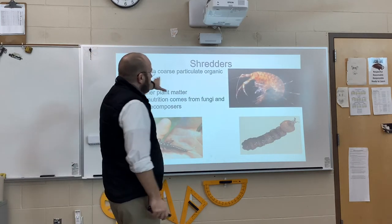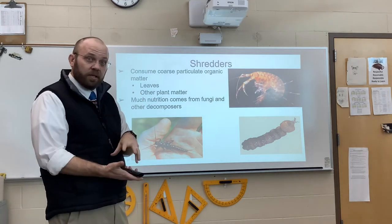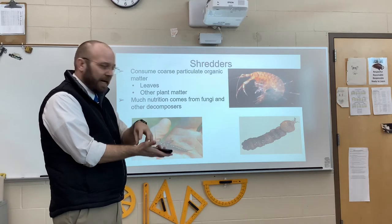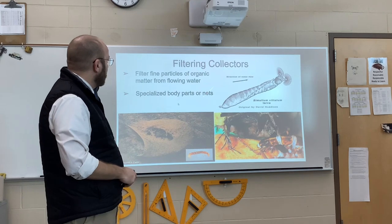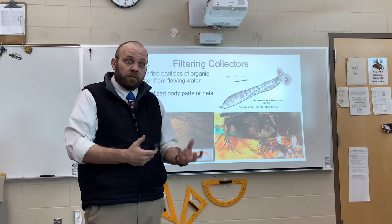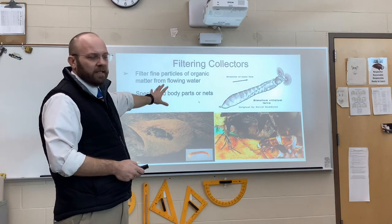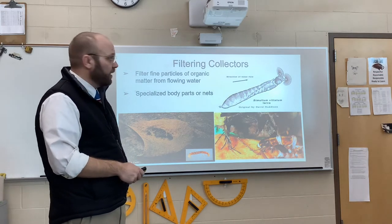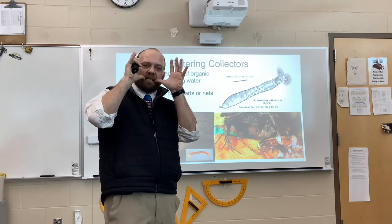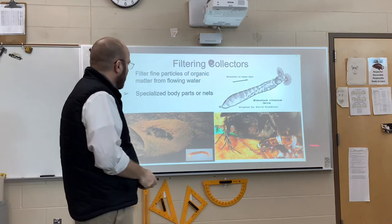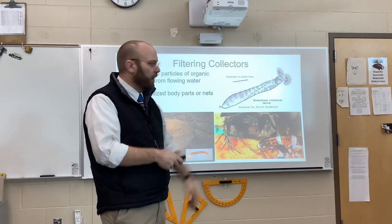Shredders consume coarse particulate organic matter — leaf litter and woody debris. Much of the nutrients they actually consume are the mold, fungi, and diatoms growing on those leaves. Filtering collectors eat the leftover material from shredders that's moving in the water column. They ideally have a specialized body part or net — an excellent example of structure and function. The Simuliidae, the black fly larvae, have an awesome walrus-like appendage outside their mouth to filter out fine particulate organic matter. Trumpet net caddis, finger net caddis, and the common net spinner all make nets ideal for filtering fine particulate organic matter.